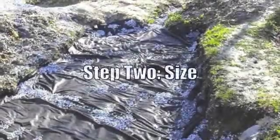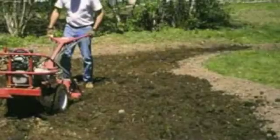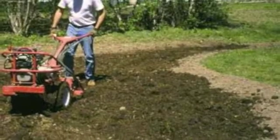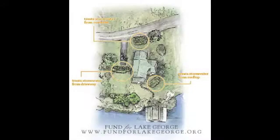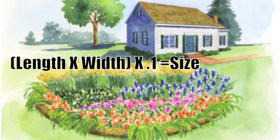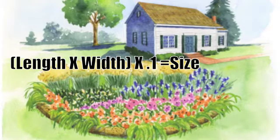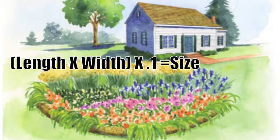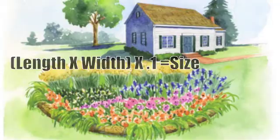Once you have identified your location, then you must determine the size of your rain garden. Rain gardens are usually 10 to 20% of the size of the impervious surface that is generating the water runoff. Start by measuring the square footage of the impervious area by multiplying length times width, then multiply the result by 0.1 or 10%. This can help create a rain garden that best fits your site.